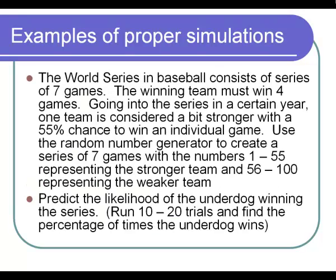In the World Series, we play a series of seven games. Often, one team is favored a little bit more than the other one, and in this World Series, one team is favored with a 55% chance of winning over the other team that's favored with a 45% chance of winning.